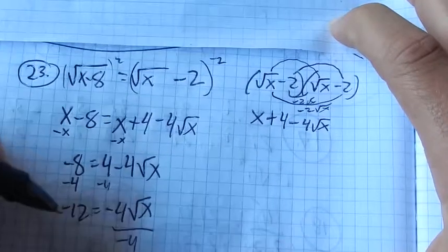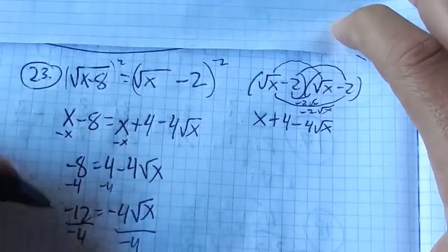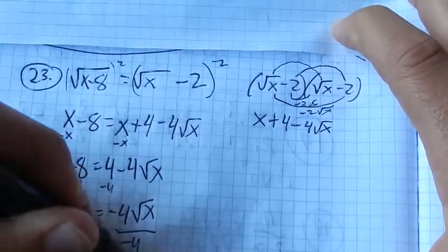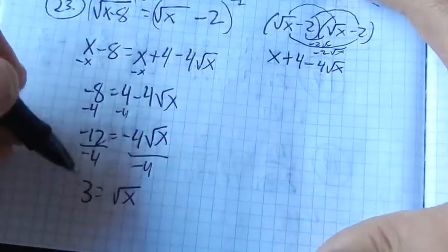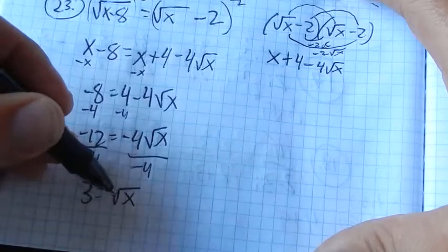Divide both sides by negative 4. And again, I'm just working negative by negative is positive to get that square root of x all on its own. Because now what I can do is I have 3 equals the square root of x.